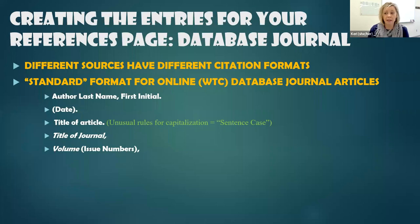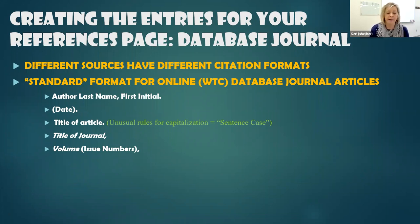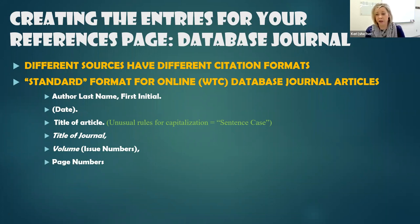Typically journal articles have a volume and an issue number. The volume will be italicized; the issue number will not. And we'll be looking for the page numbers that appeared in that journal.